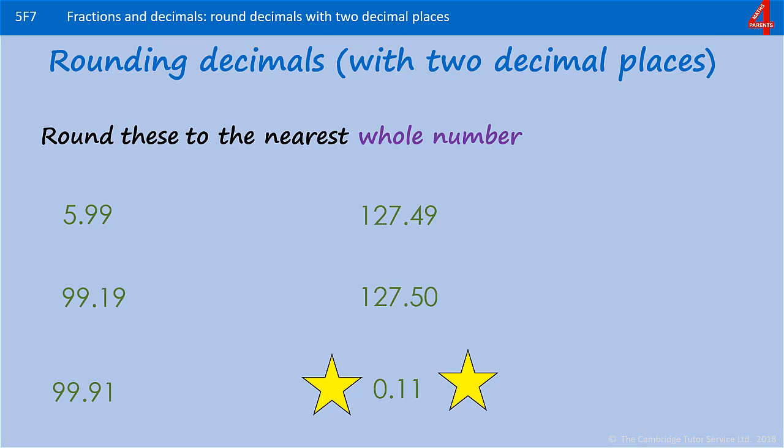First one, 5.99. The whole number is 5. We have 9 tenths, so that rounds up to 6. The next one, 99.19. The whole number is 99. There's 1 tenth, so that 99 stays as 99.